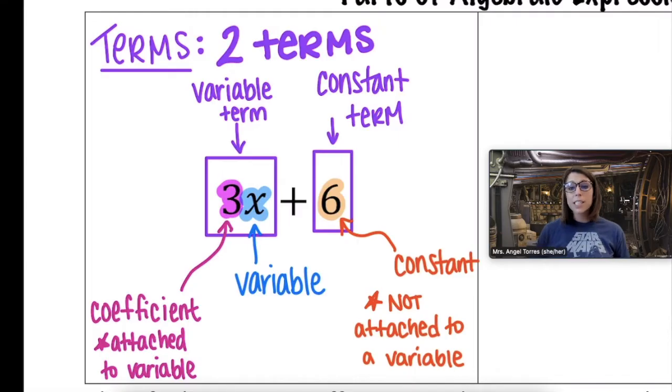So all in all this expression has two terms. The first term is a variable term 3x, the coefficient of 3, and the variable x. The second term is a constant and that constant is 6.